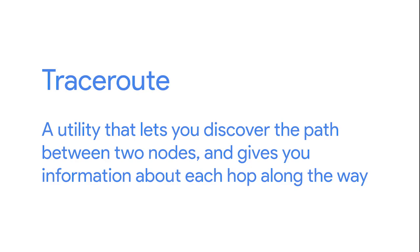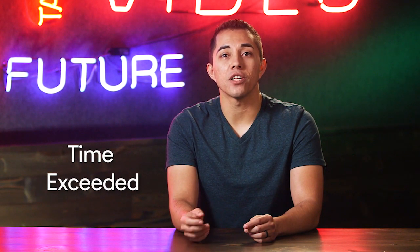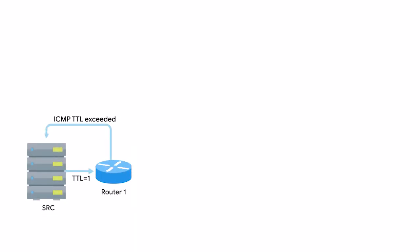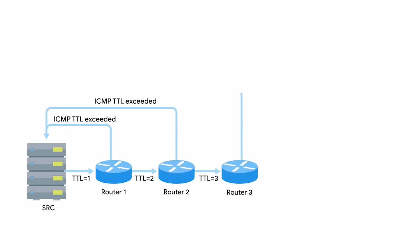Traceroute is an awesome utility that lets you discover the paths between two nodes and gives you information about each hop along the way. The way Traceroute works is through a clever manipulation of the TTL field at the IP level. The TTL field is decremented by one by every router that forwards the packet. When the TTL field reaches zero, the packet is discarded and an ICMP time exceeded message is sent back to the originating host. Traceroute uses the TTL field by first setting it to one for the first packet, then two for the second, three for the third, and so on.